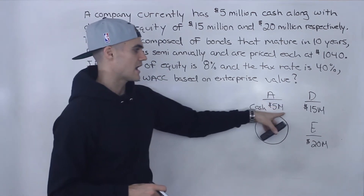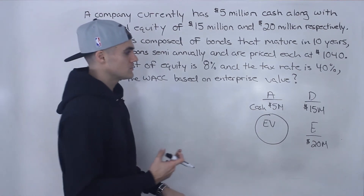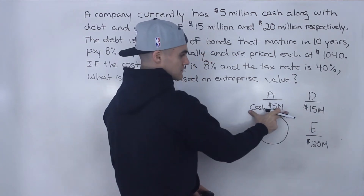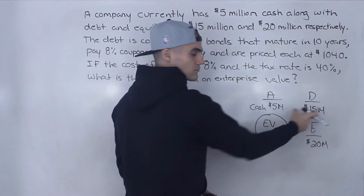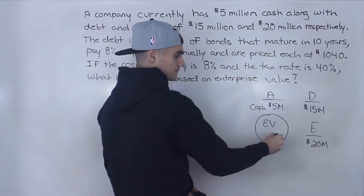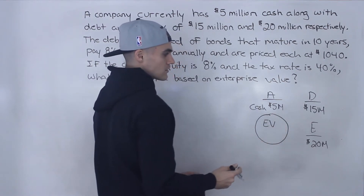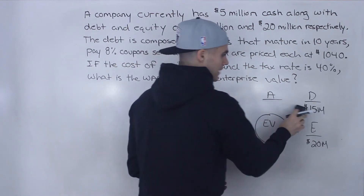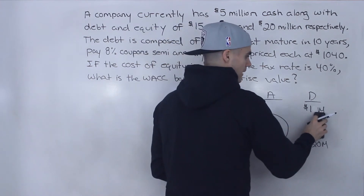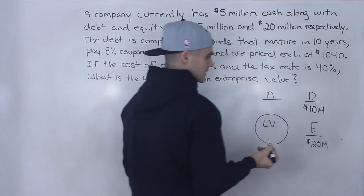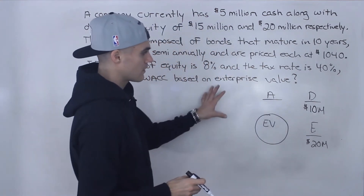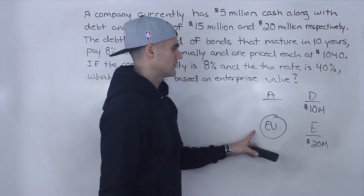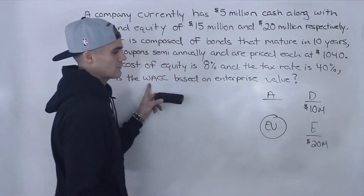When they say we calculate WACC based on enterprise value, they usually give you this excess cash figure. What you can do with this excess cash is pay down your debt. You could take this $5 million, pay down the debt by $5 million, and then your assets would just be composed of the enterprise value. So we take the cash of $5 million, pay down the debt by $5 million, and end up having debt of $10 million instead of $15 million. Now we have a balance sheet where the assets are only the enterprise value.